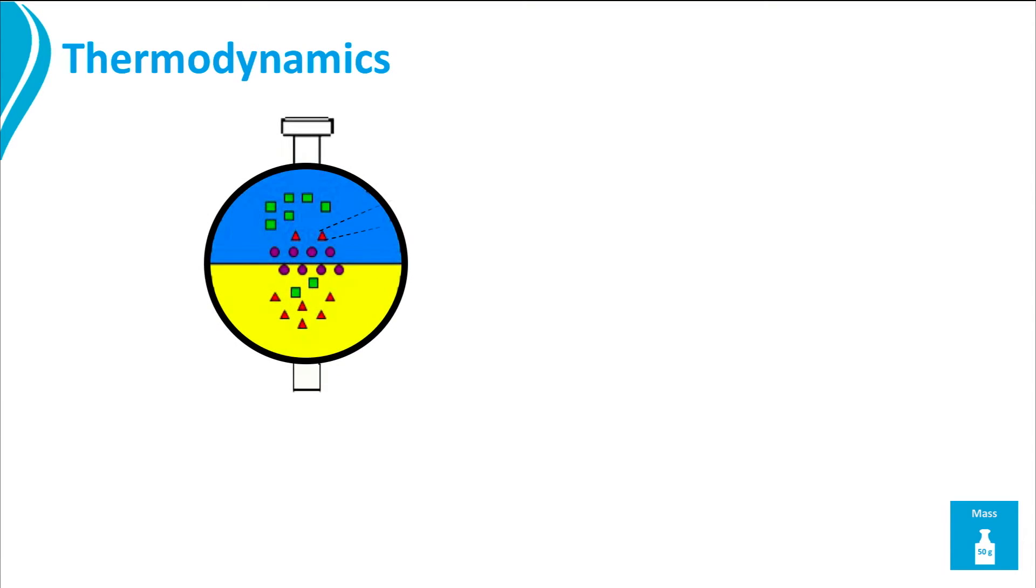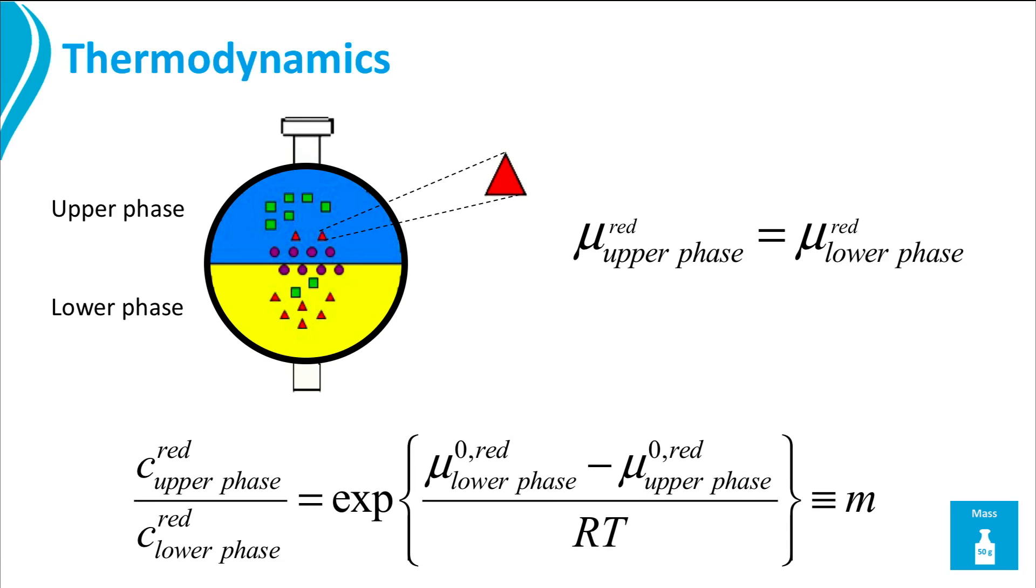Let's consider the situation of the red particles in our sketch. From thermodynamics we know that if there is an equilibrium between the two phases, we can say that the thermodynamic potential mu of a certain component in both phases is equal. Further, it is known that the chemical potential mu can be written as a function of the concentration, leading to the following relationship for the ratio of the concentrations in both phases.